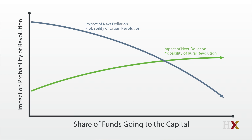We'll draw a similar line for the marginal impact of a dollar spent in the country on the probability of survival. That, of course, is increasing with the number of dollars you spend in the city, because as you spend more in the city, you spend less in the country, and that causes the extra effect of a dollar in the country to increase.